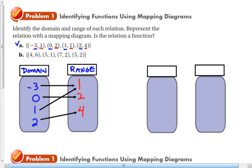And then I'm going to look closely at the diagram and make sure there's only one arrow going from each domain value to the range value. Because every input must be paired with exactly one output. So if you see more than one arrow here, so there's one arrow from negative 3, one arrow from 0, one arrow from 1, and one arrow from 2, that means it's a function.